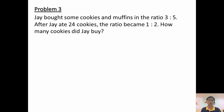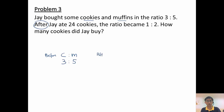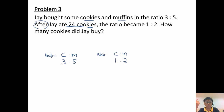Last question. Jay bought some cookies and muffins in the ratio of 3 to 5. After Jay ate 24 cookies, the ratio became 1 to 2. How many cookies did Jay buy? First, what are we comparing? Now we are not comparing Jay and Raymond — we are comparing cookies and muffins in the ratio of 3 to 5. I have an after, so I set up a before ratio and an after ratio. After, cookies to muffins is 1 to 2. Jay ate 24 cookies — did he eat any muffins? No. So muffins remain the same.